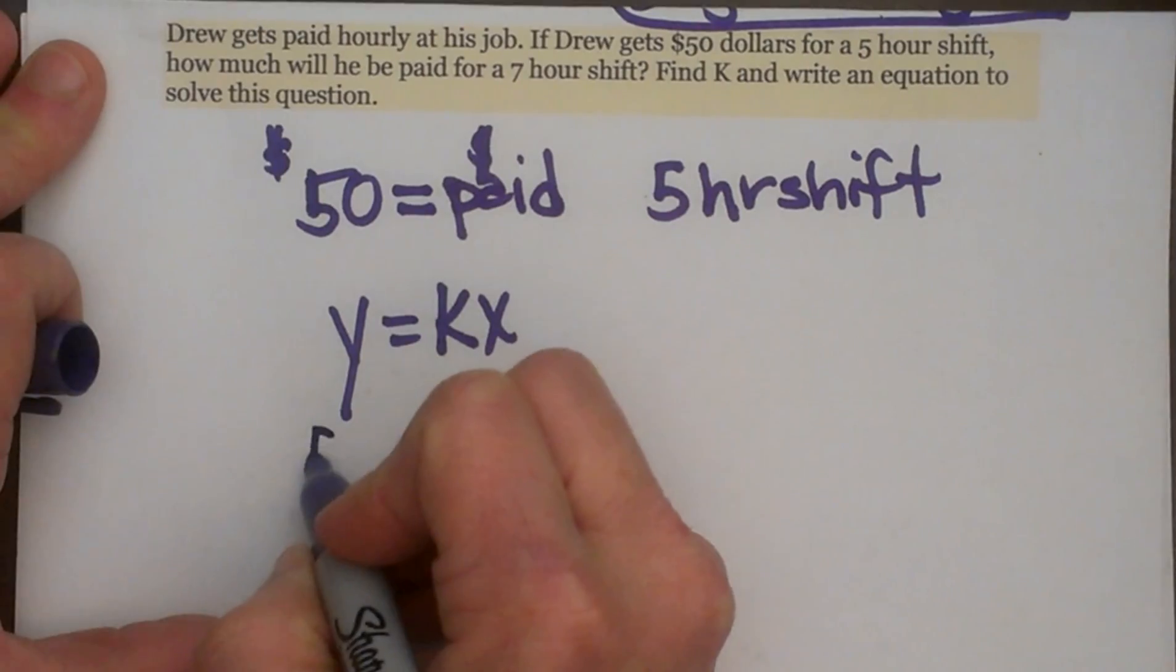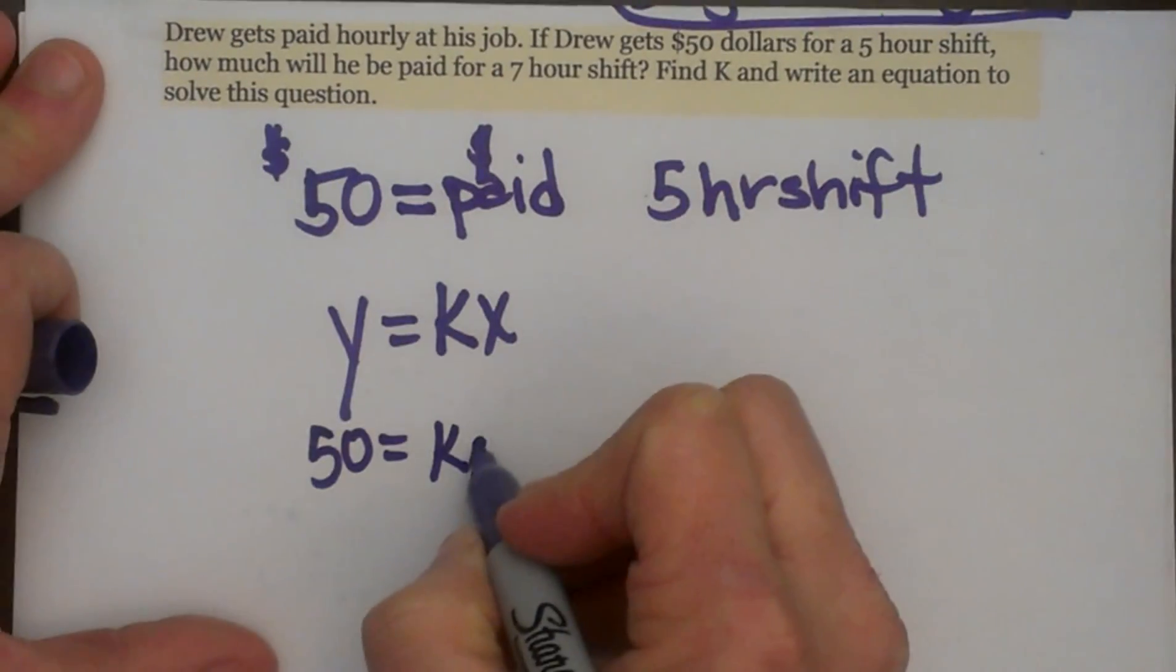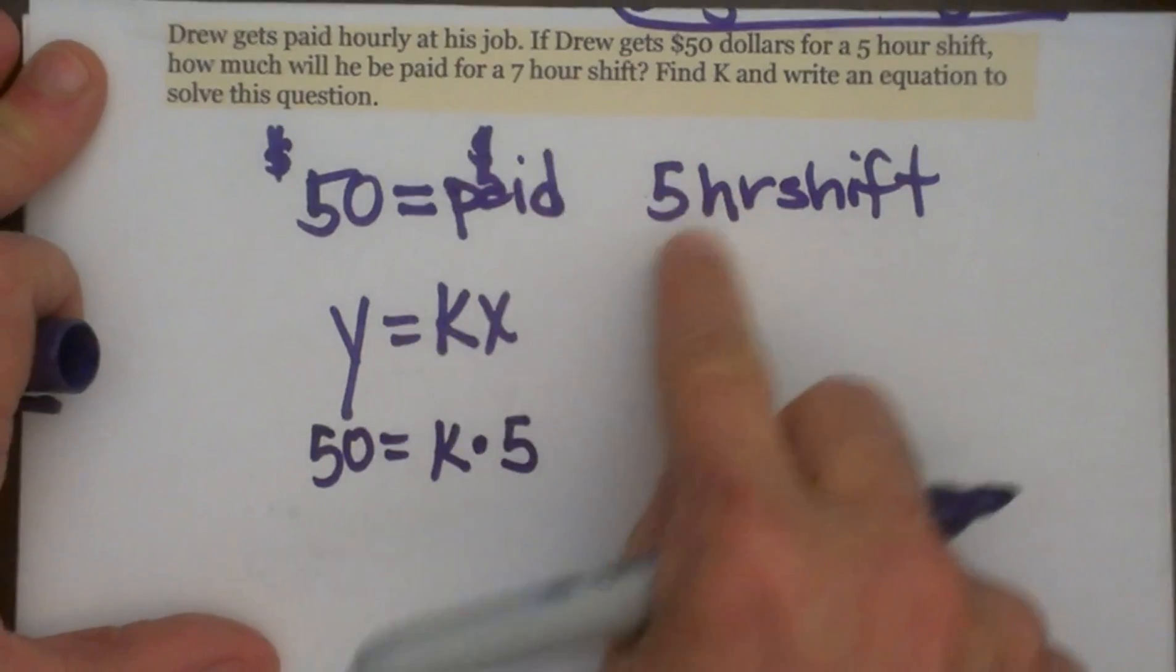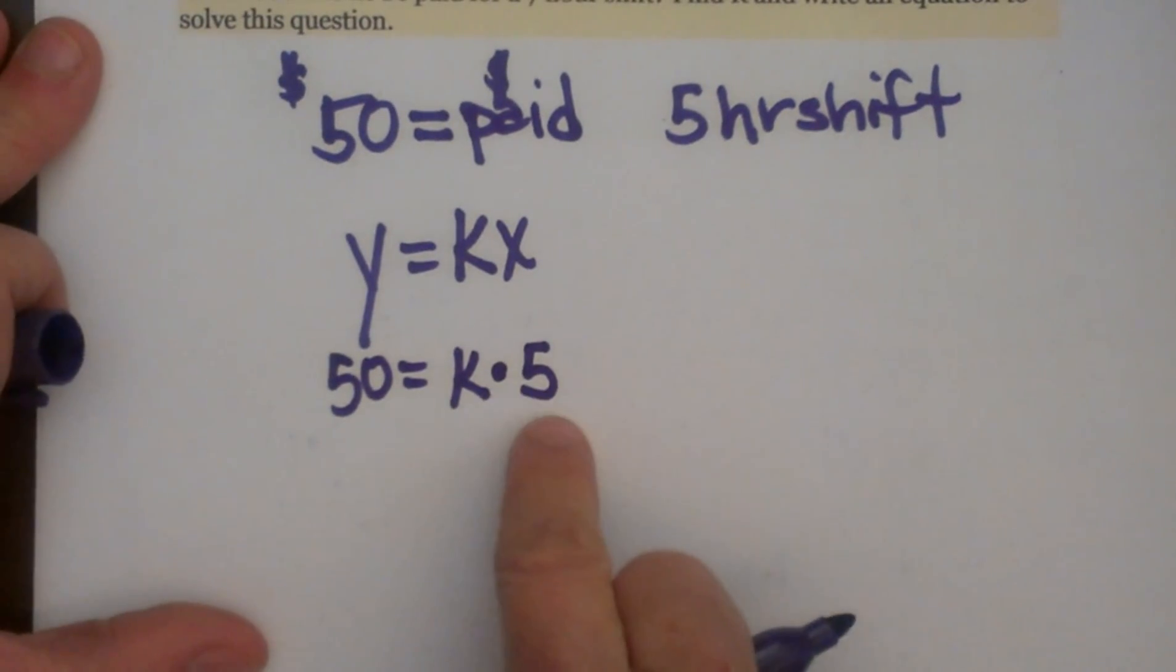So I am going to plug in $50 for Y, K is still K, and then 5 is our X, or our independent variable.